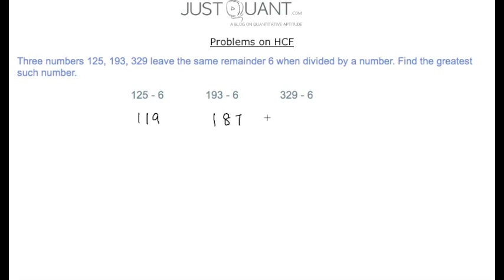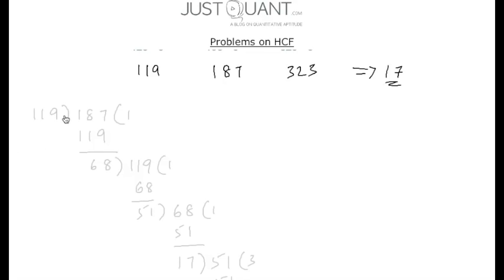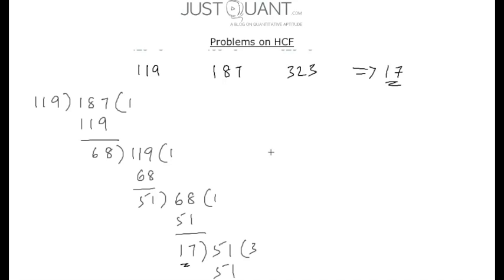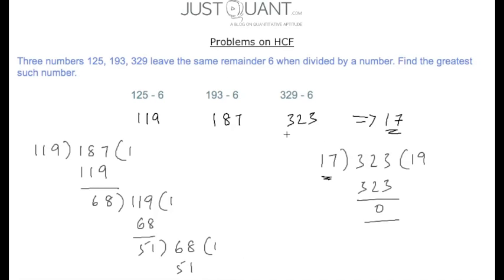Subtracting 6 from each of these numbers we get 119, 187, and 323. The greatest number n that divides each of these three numbers exactly is the HCF of these three numbers. Calculating the HCF we get 17 — the HCF of 119 and 187 is 17, and the HCF of 17 and 323 is again 17.